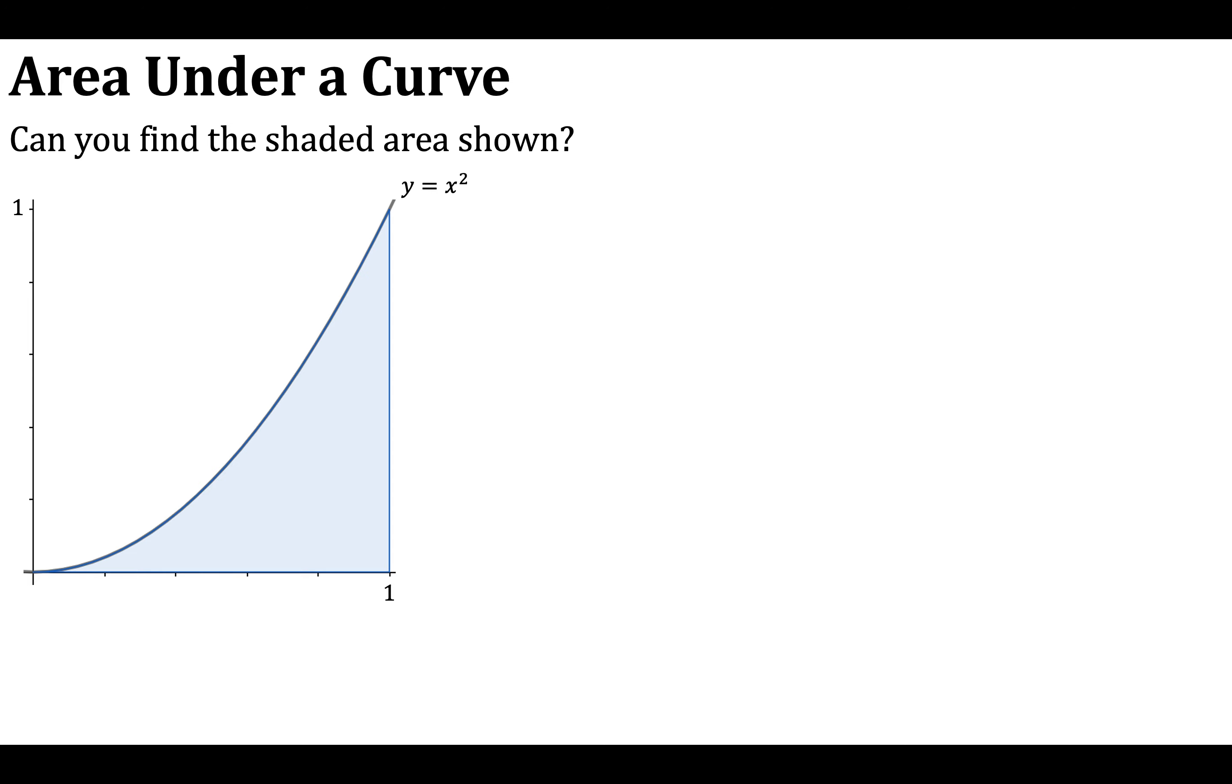You might want to pause the video for a few seconds, just have a think about this. We can see that there's the curve here, y equals x squared, and we can see there's a straight line here at x equals 1. And obviously we've got the straight line of the x-axis here, so how could you find that shaded area? Have a think about that for a moment.